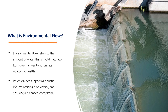The question arises: what is environmental flow? Environmental flow refers to the amount of water that should naturally flow down a river to sustain its ecological health. It is crucial for supporting aquatic life, maintaining biodiversity, and ensuring a balanced ecosystem.